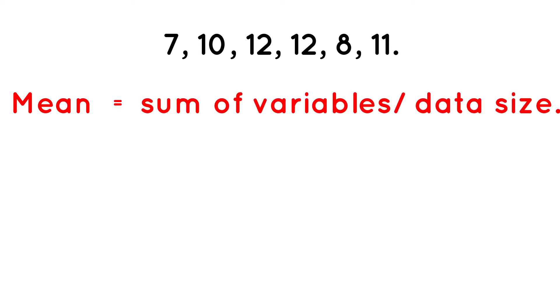Let's assume we have a dataset where I entered a class and asked six students to tell me their age. After asking, I have the following dataset: 7, 10, 12, 12, 8, 11. If I'm supposed to get the mean of this dataset, the formula is the sum of all the variables divided by the size of the dataset. That is going to be 60 divided by 6, which gives us 10. So the mean of our dataset is 10.